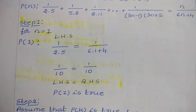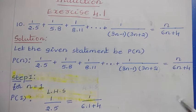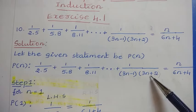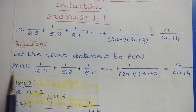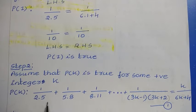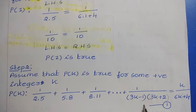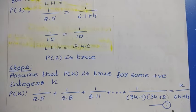Now we have proved the statement for N=1. In the second step, we take a positive integer K and assume the given statement is true for N=K. We write the statement in the form P(K) by replacing N with K everywhere: 1/(2×5) + 1/(5×8) + 1/(8×11) + ... + 1/((3K−1)(3K+2)) = K/(6K+4). Let us take this as statement 1 — our assumption.